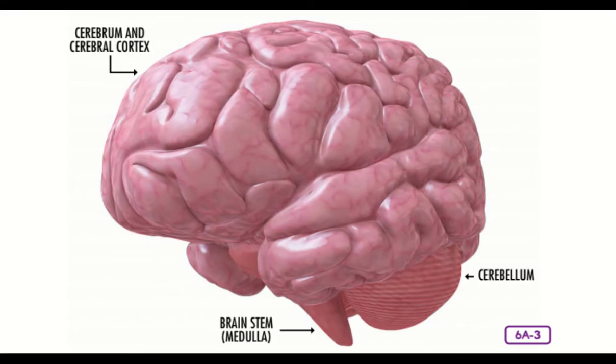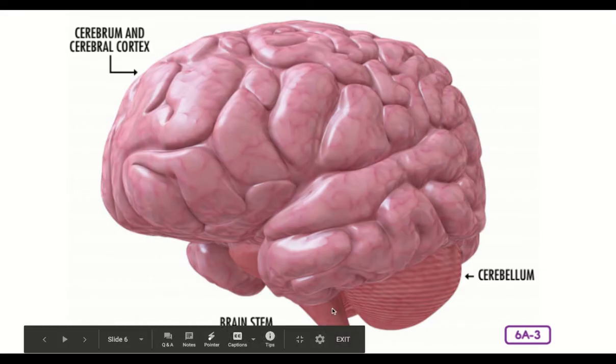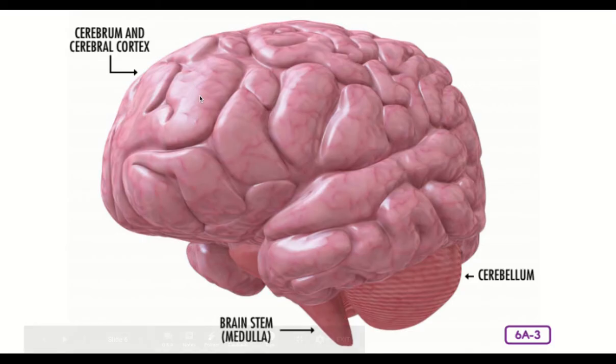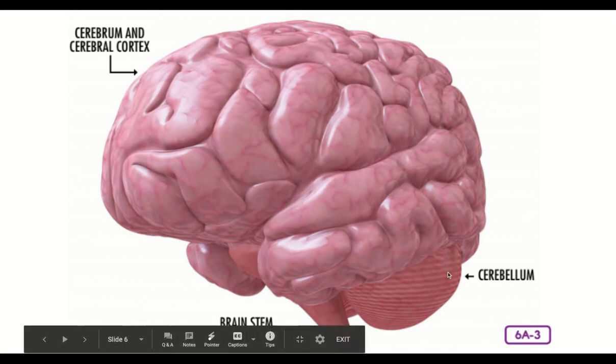There are three main sections of the brain. They are the brain stem, down here towards the bottom, the cerebrum and cerebral cortex, and the cerebellum. Each part of the brain has an important function.